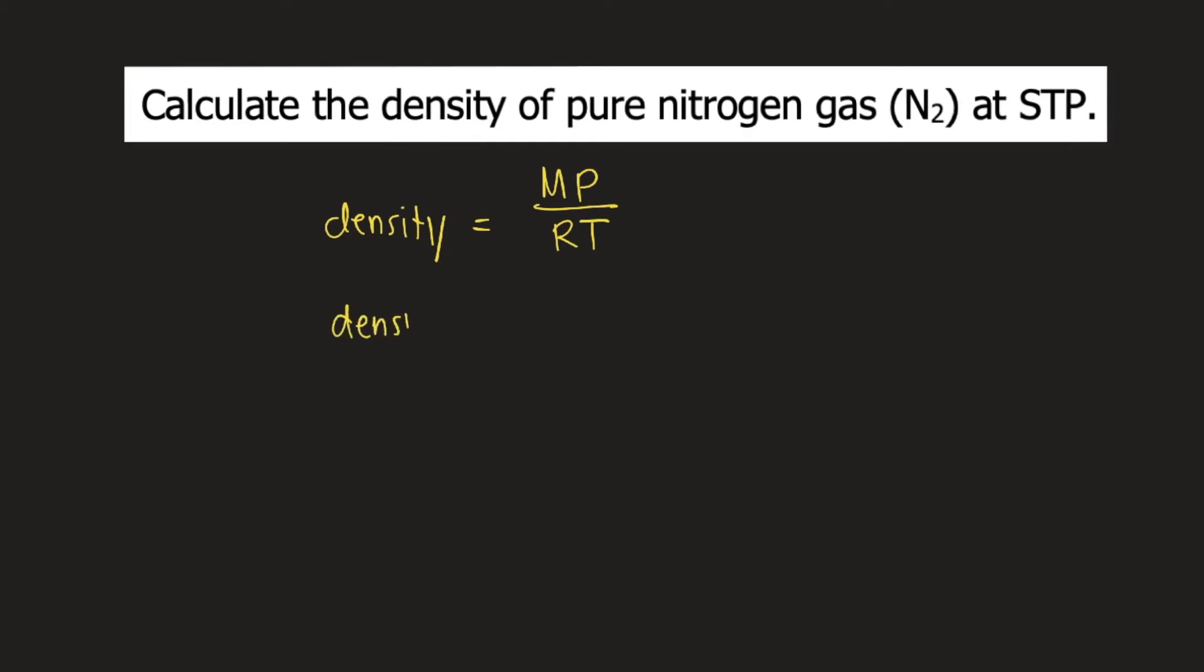So density is equal to M. Capital M is the molar mass of the gas. So the molar mass of nitrogen gas is 28.02 grams per mole.